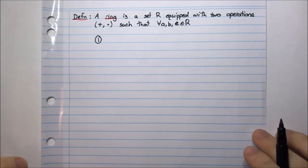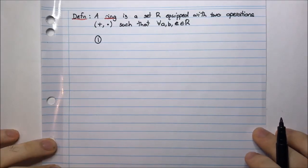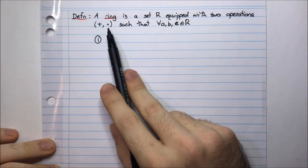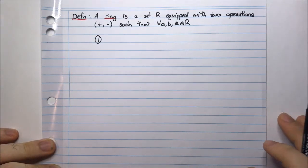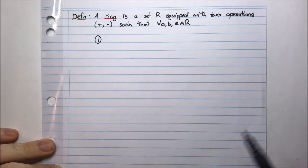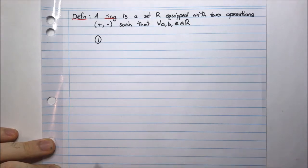In this video we'll have a look at the definition of what a ring is. A ring is a set R equipped with two operations, we usually call them addition and multiplication, but it's important to note that they're not always the usual addition and multiplication that we're familiar with. It's a set R equipped with these two operations such that for all elements A, B, and C in R we have the following conditions.